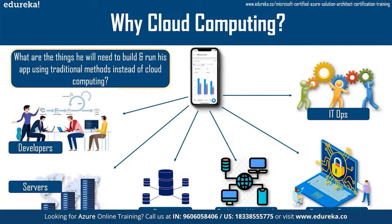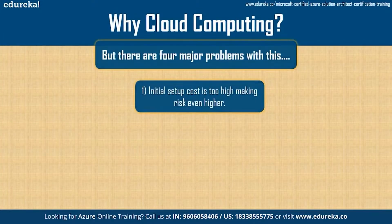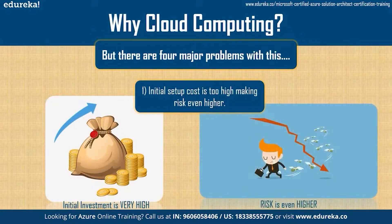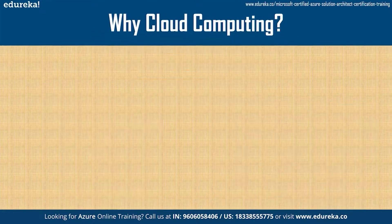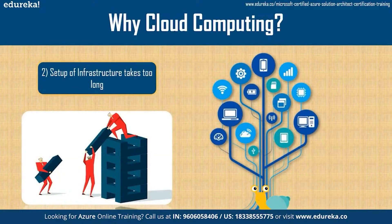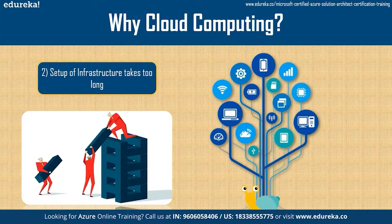John figured there would be four major problems with this setup. The first problem is that owning his own infrastructure would require a huge amount of money, and because of the large investment in setup, this would greatly increase the risk if the app fails. The second problem is that the infrastructure would take too long to set up — he would have to buy all the components, hire IT technicians to install and connect everything. So that means more money and more time.